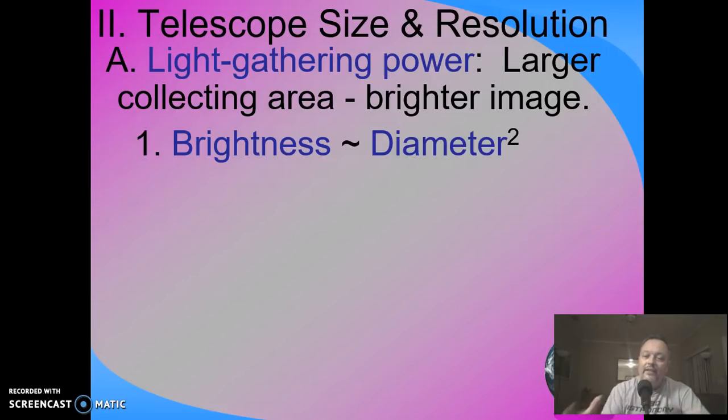And so the brightness of a telescope is proportional to the diameter squared of its mirror. To give an example, when you buy, let's say, a Dobsonian, they come in sizes that are like 6-inch mirrors, 8-inch, 10-inch, 12-inch, and so forth.